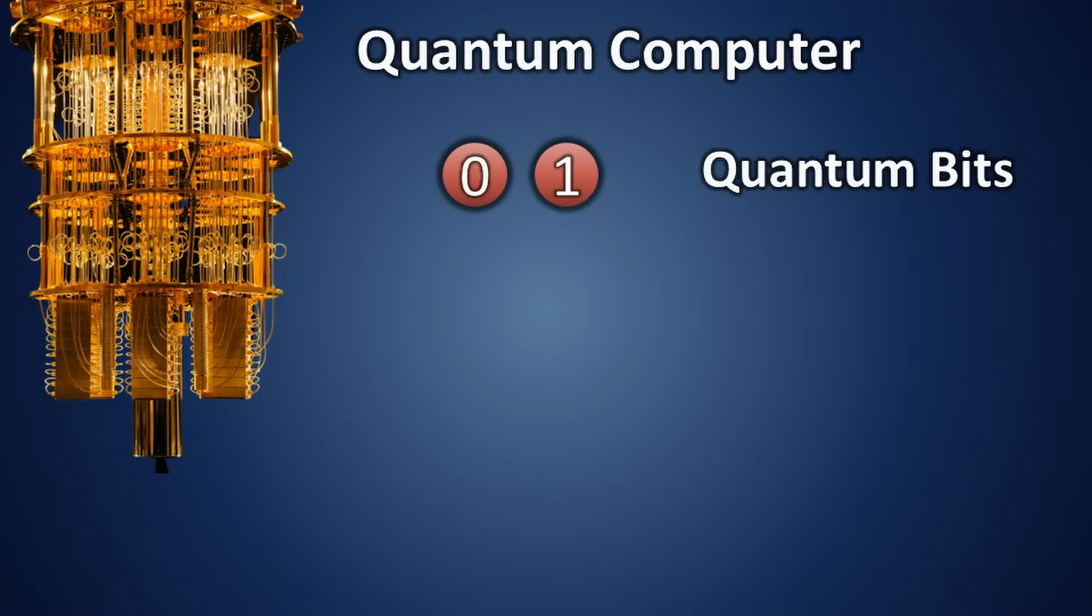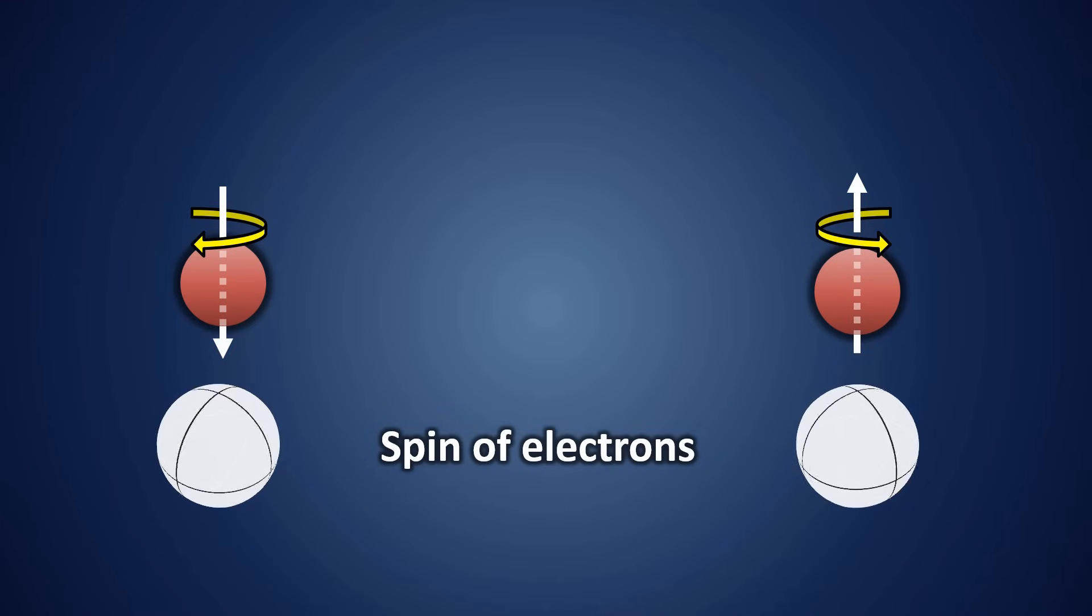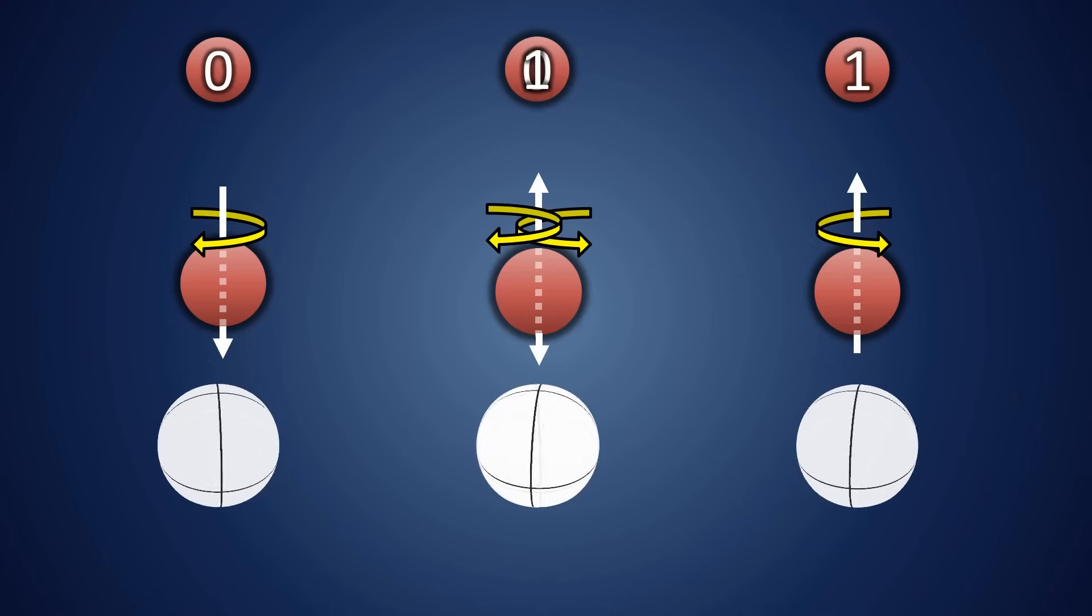Now let us talk about quantum computers. Unlike classical computers, quantum computers use quantum bits, or qubits for short. A qubit can be implemented using properties of particles like the spin of an electron or the polarization of a photon. That is, an electron's clockwise spin can be taken as zero, and its anticlockwise spin as one. But in addition to these two states, an electron can also exist in a combination of both spins simultaneously.